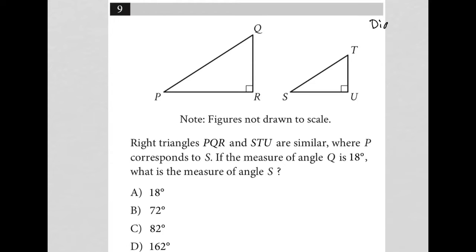This question is a diagram question. Looks like we've been provided with two right triangles. Most likely they're similar, but let's read the question to see what we have. Right triangles PQR and STU are similar.